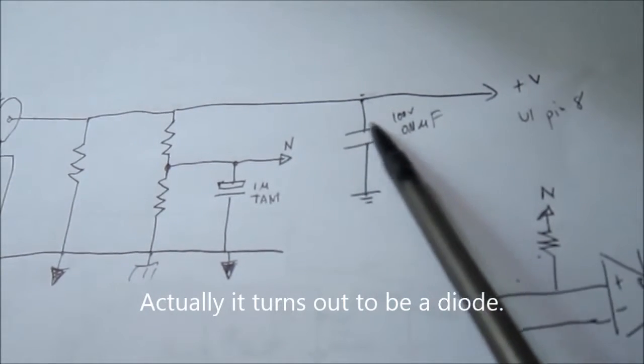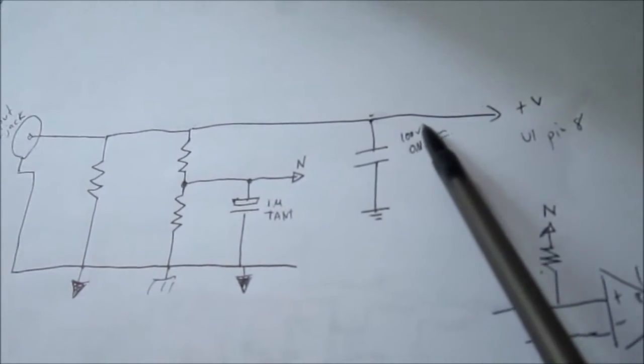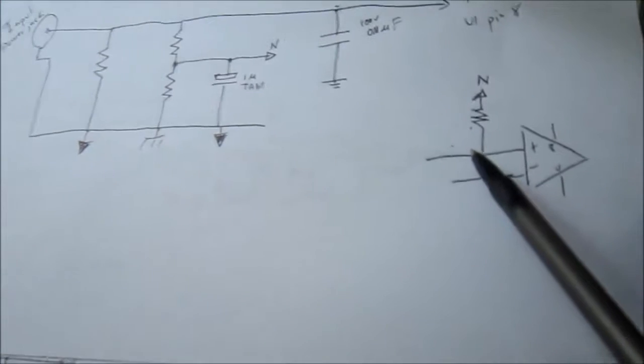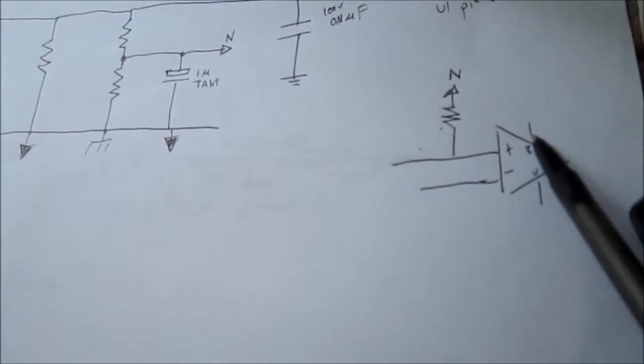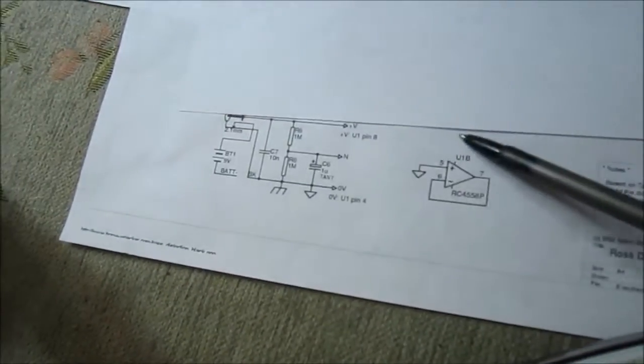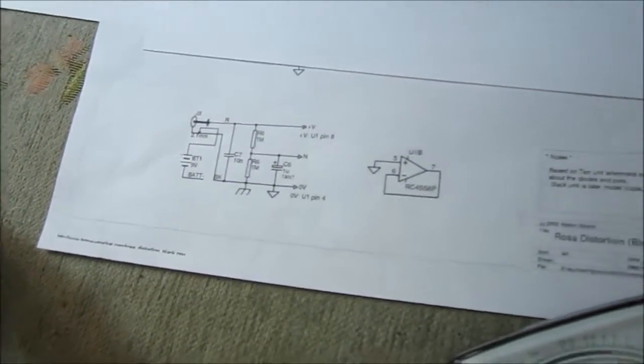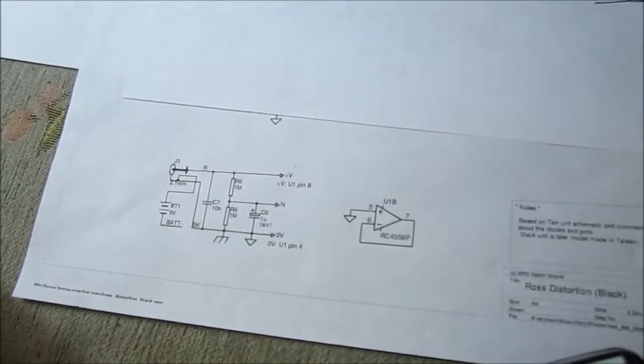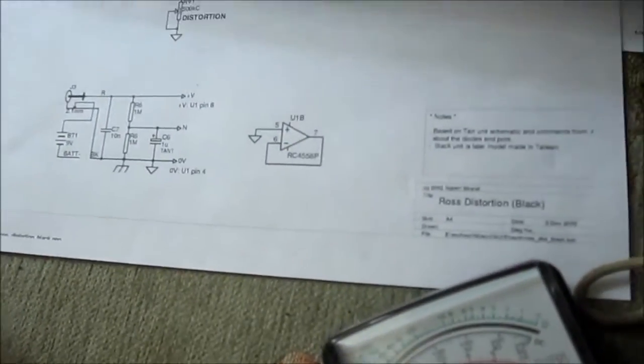And as well, there's a capacitor added here at the end just before it goes into the powers, powering the op amp chip. But everything is pretty much how it is on this wiring diagram posted online. This says it's based on the tan unit. Although, they're calling it for the black unit. I don't know why they would do that.